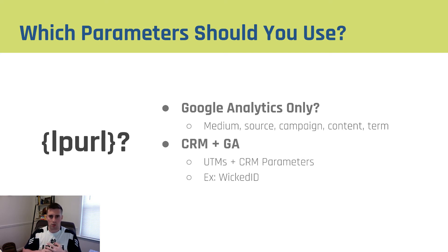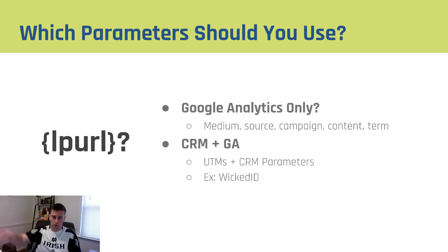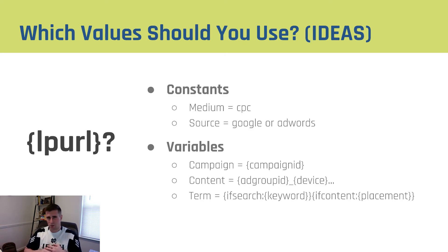So which parameters should you use? If you're only using Google Analytics, make sure you're using medium, source, campaign, content, and term in your tracking template — if you use ours, it's already built in. If you're using a CRM and GA together, you'll want to use your UTMs plus your CRM parameters. Wicked ID is a great example if you're using Wicked Reports. HubSpot and Infusionsoft each have their own specific things. With your CRMs, you'll typically use hidden fields in your forms that inherit that information from your tracking template to pull it into the backend.